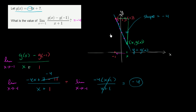Either way we get negative 4. But if you just realize this is a line, it's going to have a constant slope. This is just the slope between some arbitrary point on the line and the point negative 1 comma 11 — well, that's just going to be the same as the slope of the line, which is negative 4.